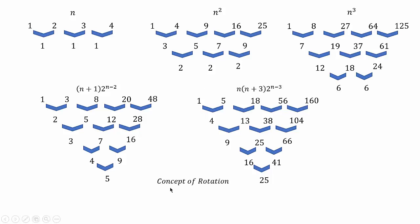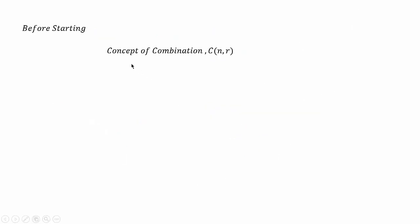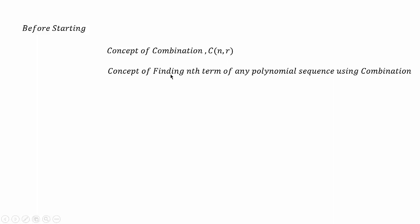So today we are going to learn the concept of rotation of sequences. You can find this concept on Google or any online resources, because while playing with numbers I came to this idea. In rotation, what we do is take advantage of this diagonal element and rotate this sequence to get the result. Before starting, you need to know the concept of combination — the combination of n objects taken r at a time — and its application to find the nth term of any polynomial sequence. If you do not have that knowledge, you can look at the video linked in the description below.